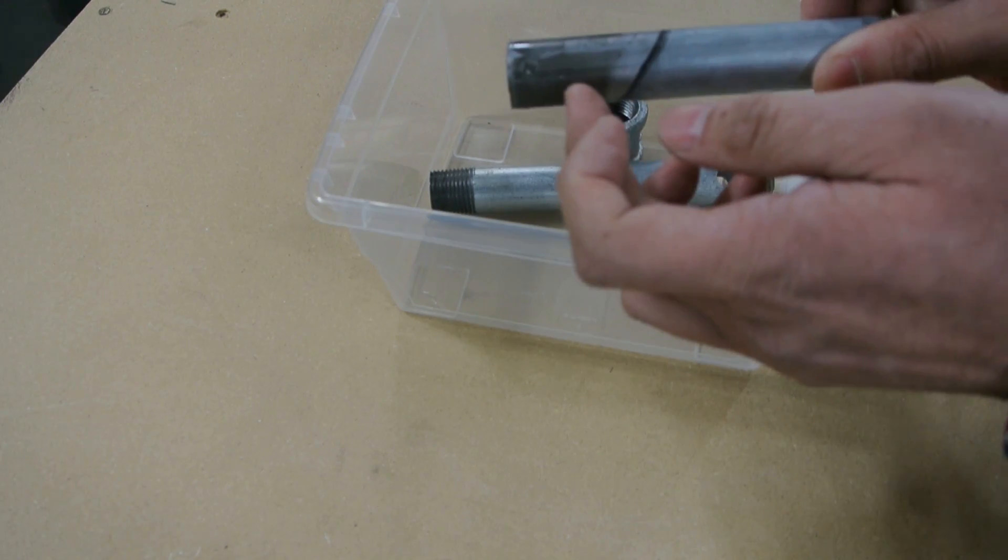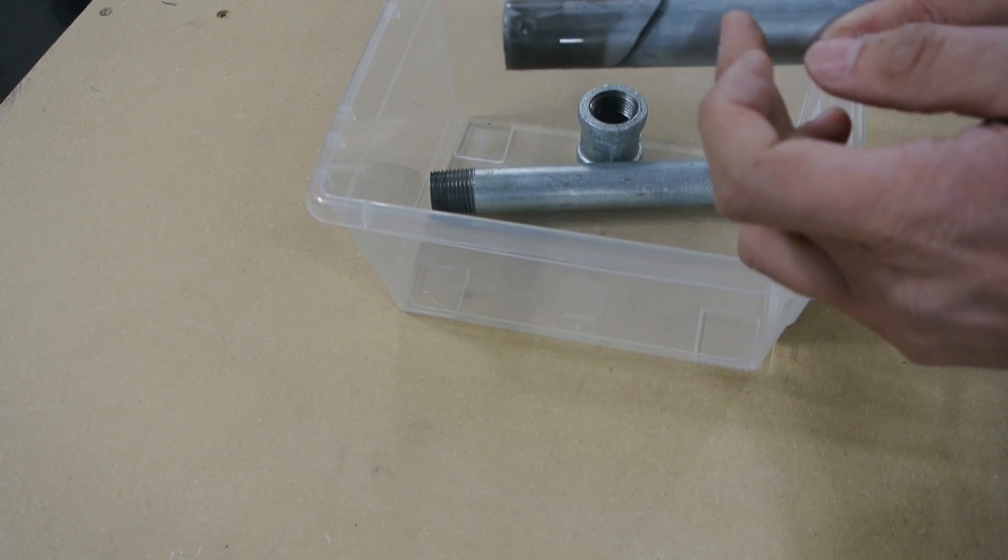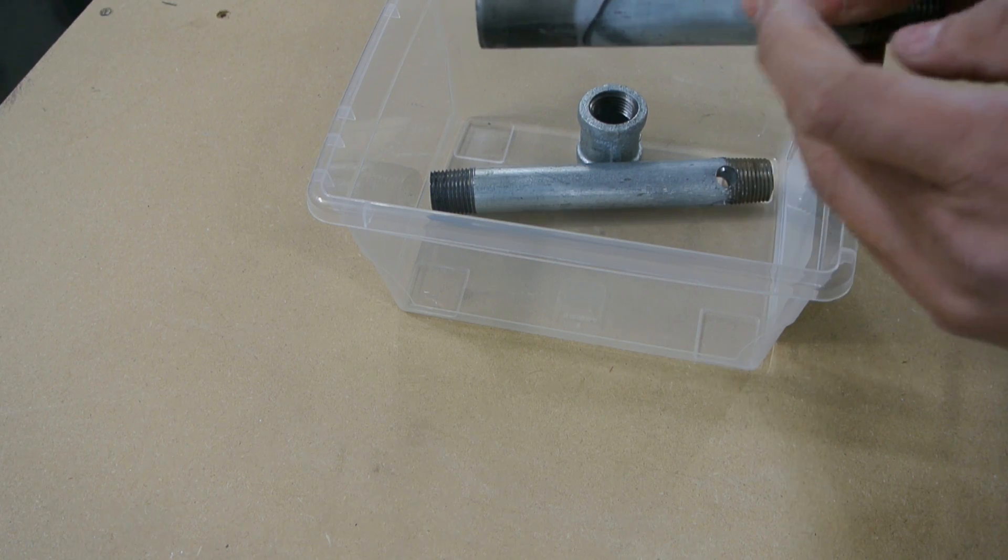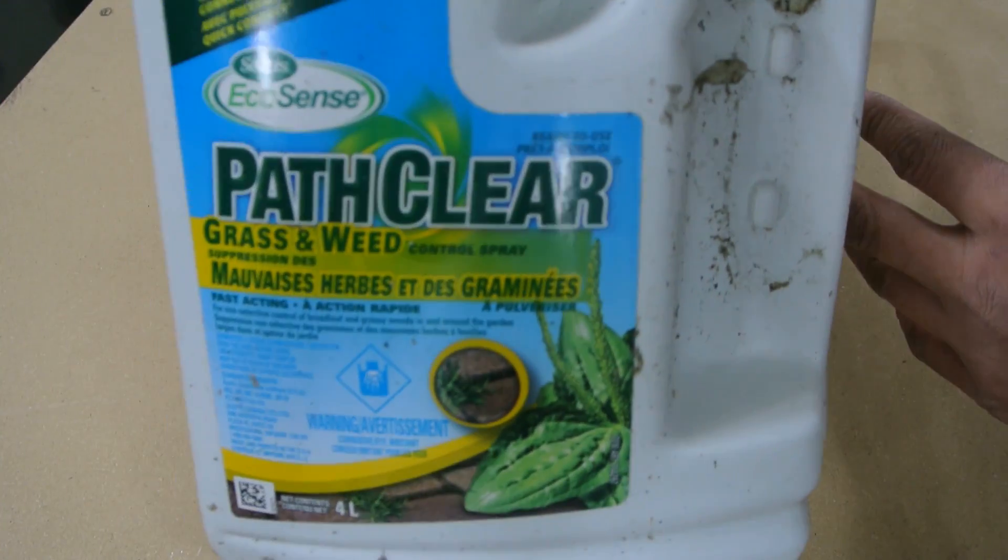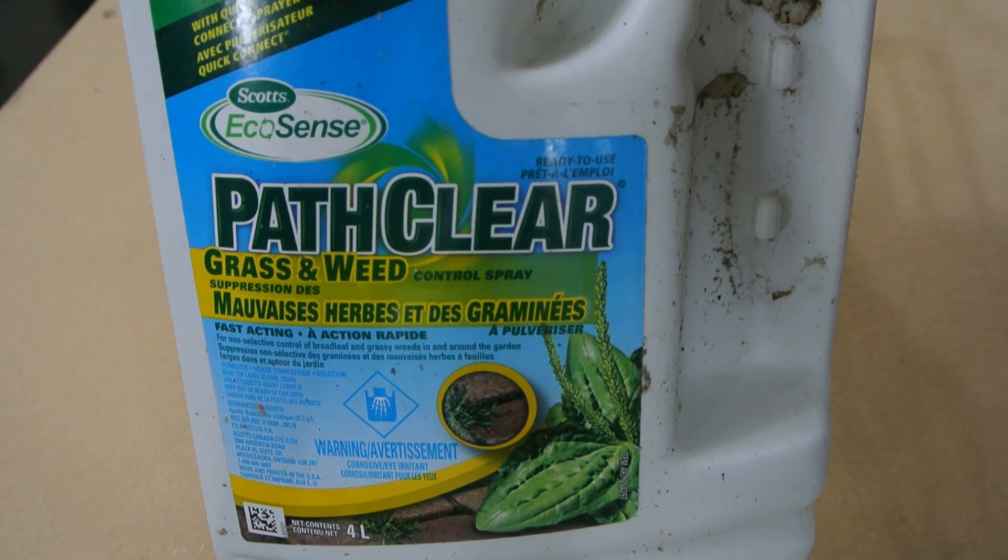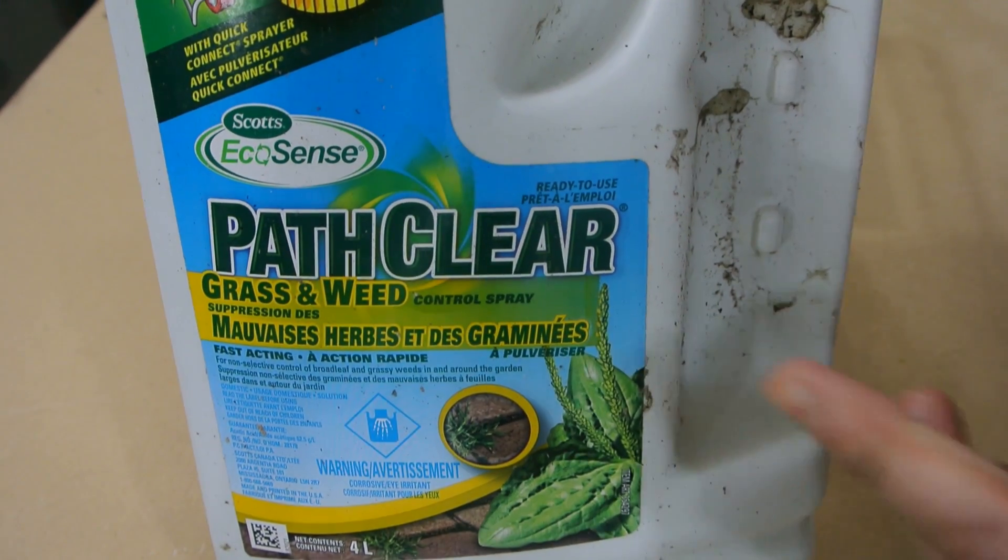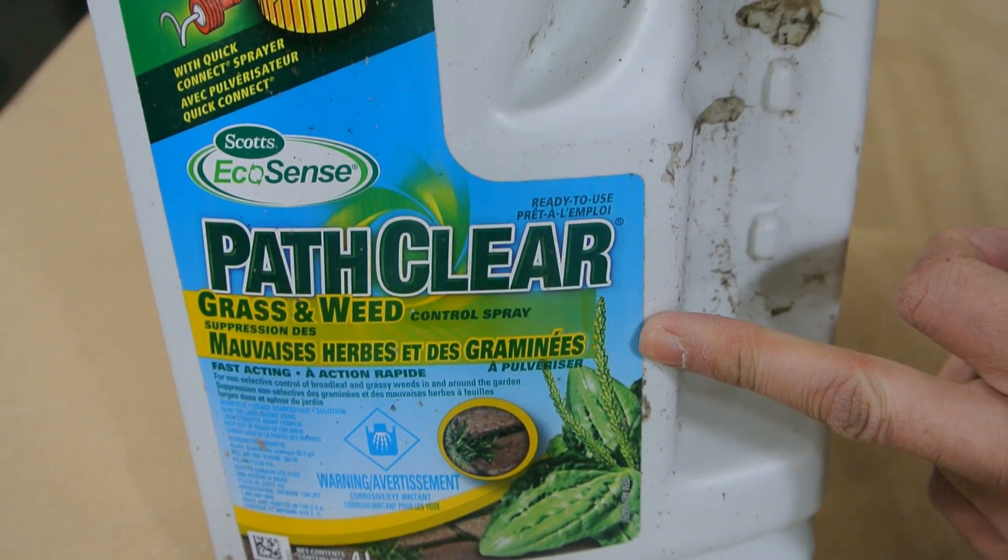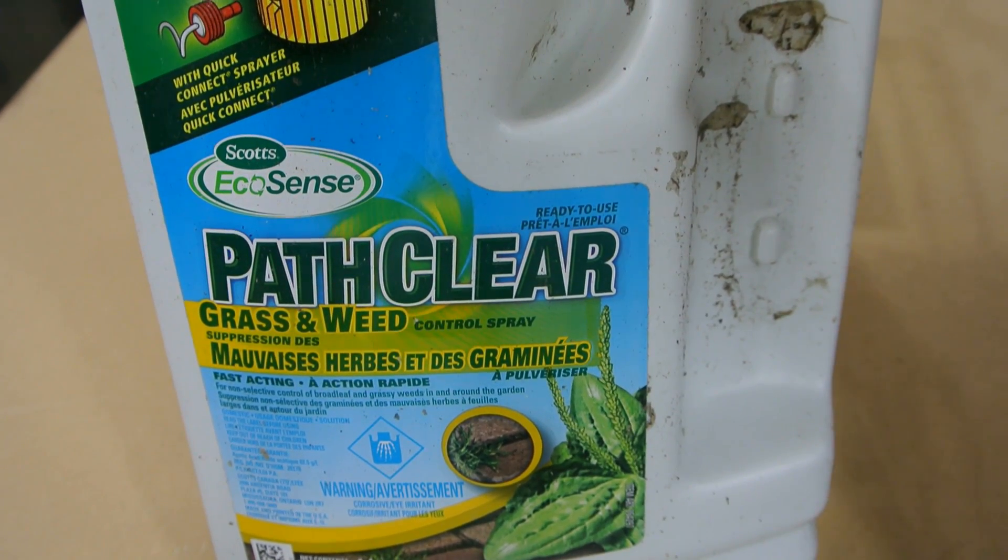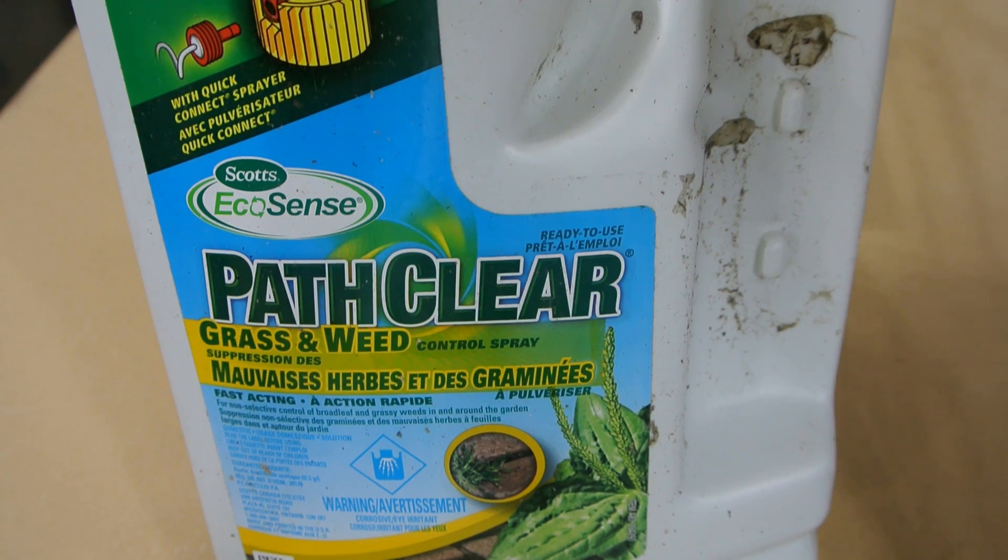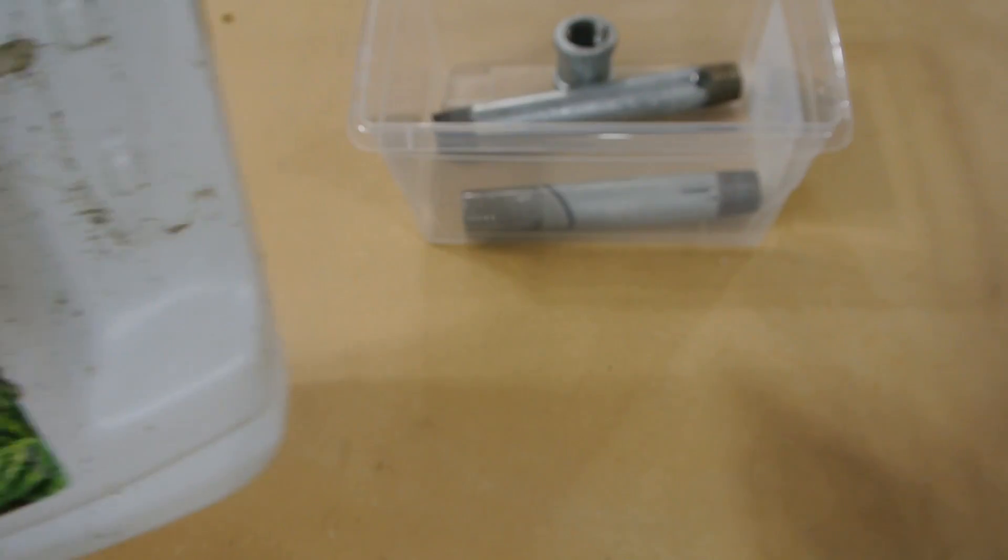Between the old and then the new part, this is still galvanized and this isn't. I'm using this stuff here, Scott's Path Clear Weed Killer. Basically, all this is is acetic acid, the same as vinegar except much more concentrated, so it's a little stronger. That's why I'm using it, but you can just use regular vinegar as well.